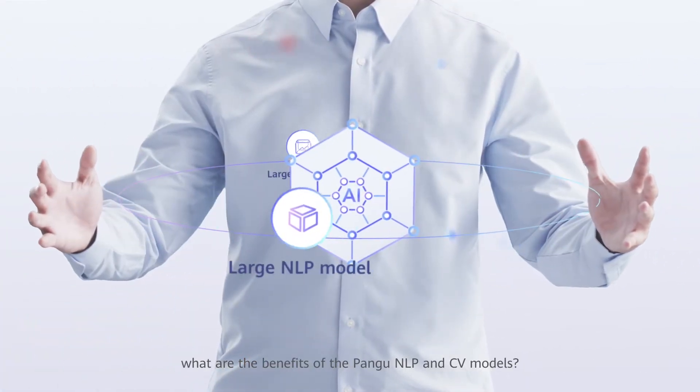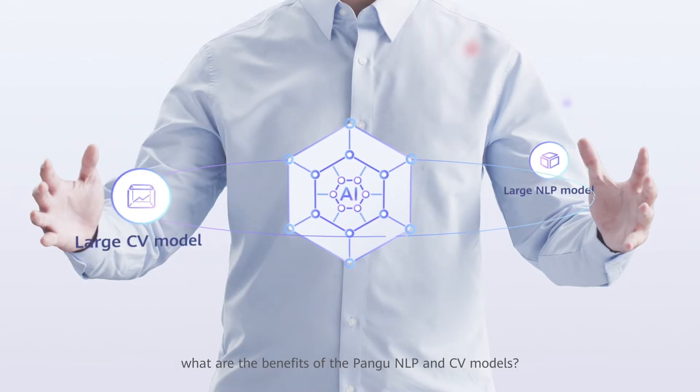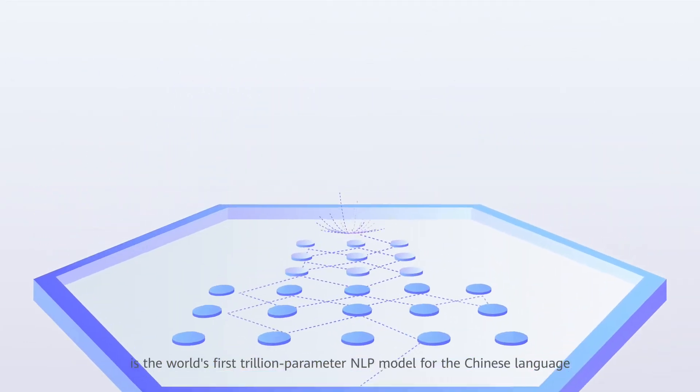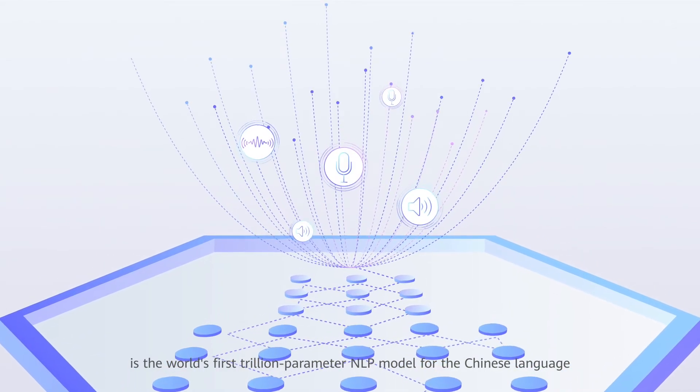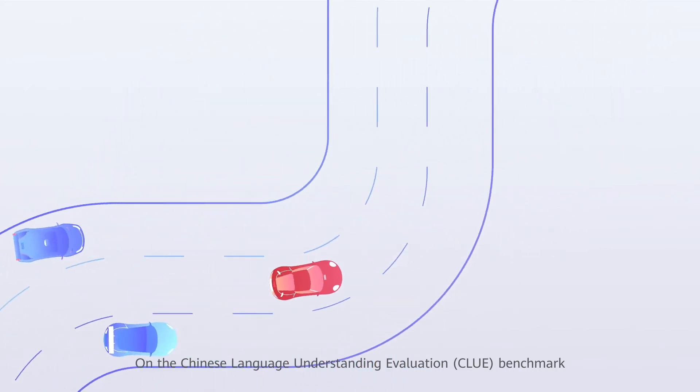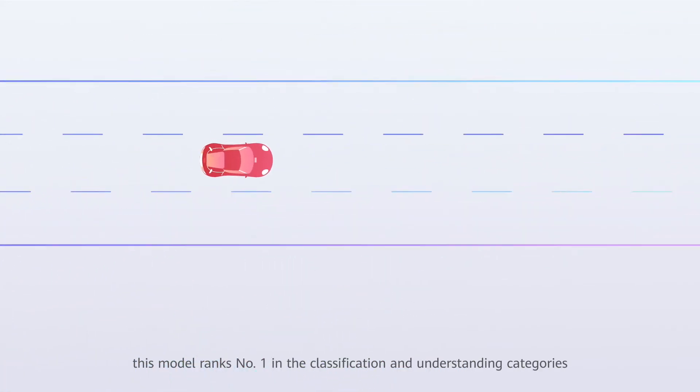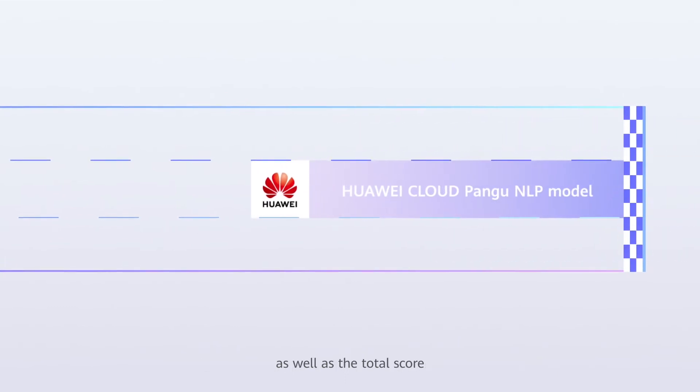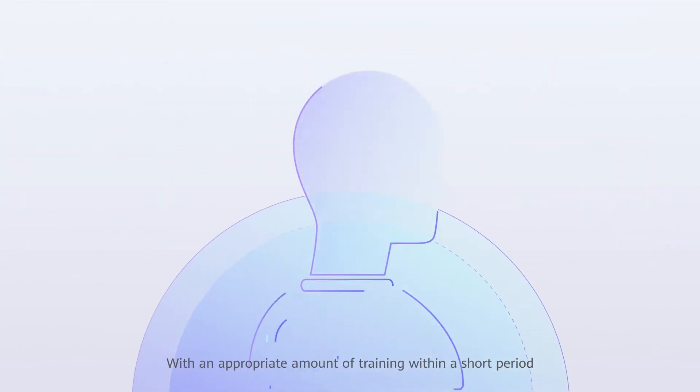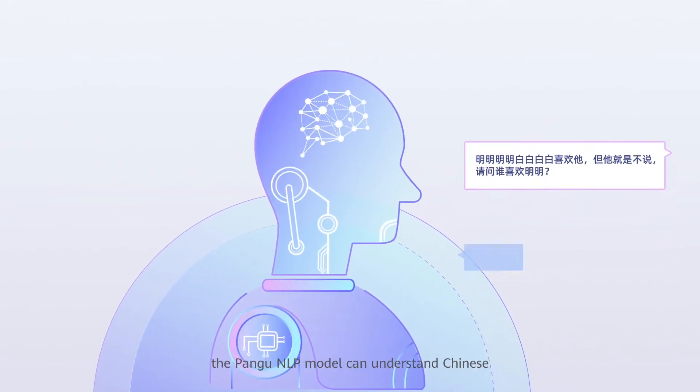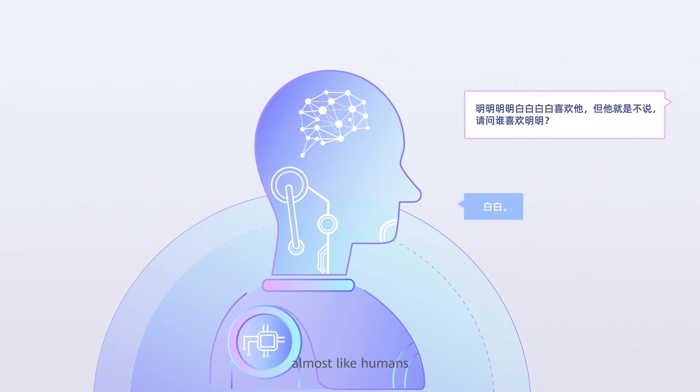In practice, what are the benefits of the Pangu NLP and CV models? The Huawei Pangu model is the world's first trillion-parameter NLP model for the Chinese language. On the Chinese Language Understanding Evaluation CLUE Benchmark, this model ranks number one in the classification and understanding categories, as well as the total score. With an appropriate amount of training within a short period, the Pangu NLP model can understand Chinese almost like humans.